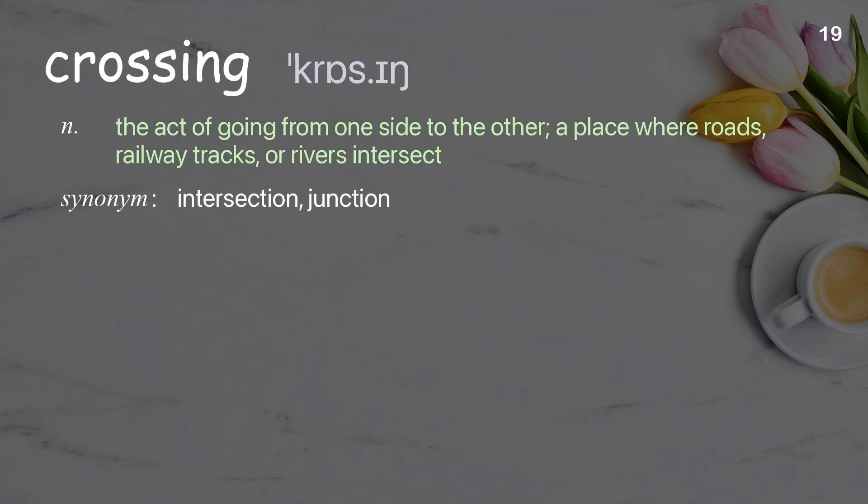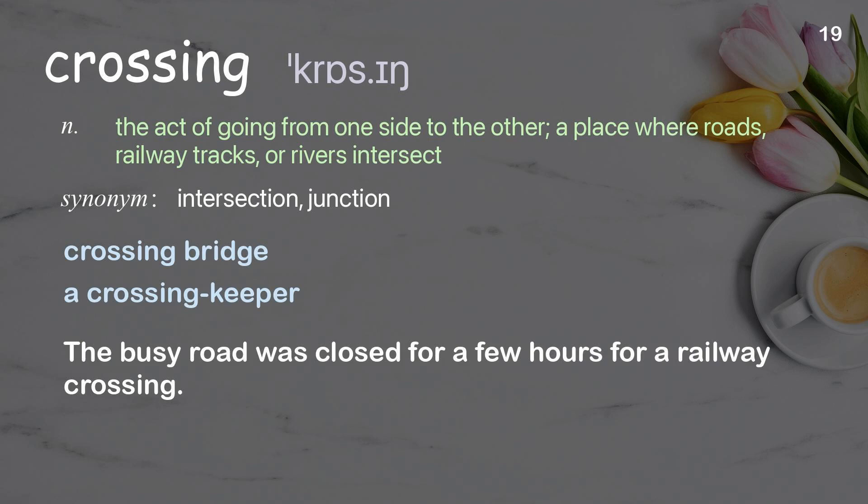Crossing: The act of going from one side to the other; a place where roads, railway tracks, or rivers intersect. Examples: A crossing keeper. The busy road was closed for a few hours for a railway crossing.